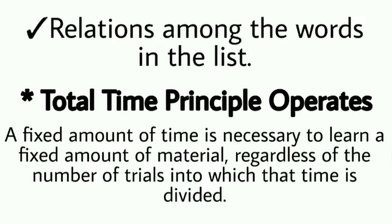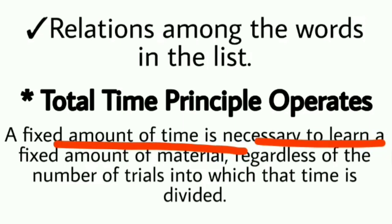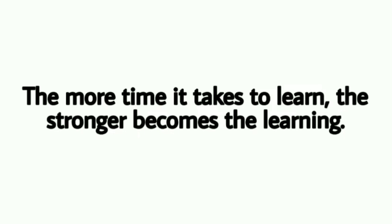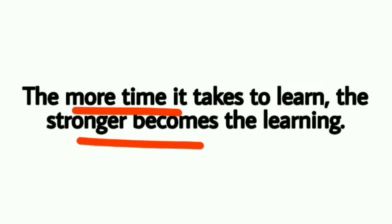Psychologists ka kehna hai ki fixed amount of time is necessary to learn a fixed amount of material — matlab chahe aap apni learning ko kitna bhi easy kyun na kar le, ek fixed amount of time toh chahiye hi hota hai learning karne ke liye. Ise hum bolte hain total time principle. Jitni lambi list hoti hai, jitna un words mein kam association hota hai, jitna kam relation hota hai, utna hi zyada time lagta hai un words ko yaad karne mein. Aur jitna zyada time liya jaata hai learning ke liye, utni hi achchi learning hoti hai — jo cheez hum jhat se yaad karte hain woh hum jhat se bhool bhi jaate hain.